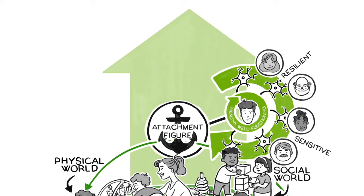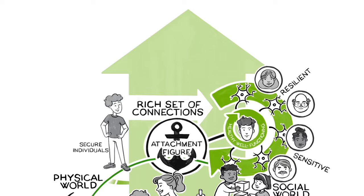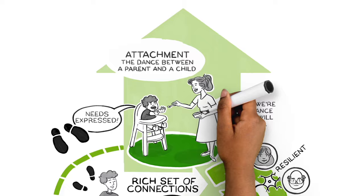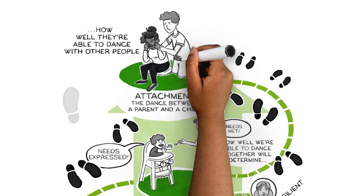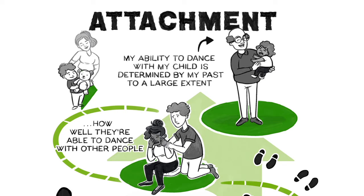In secure individuals, we see that rich set of connections. When we talk about attachment, we're talking about the dance between a parent and a child. How well we're able to dance together will determine how well they're able to dance with other people later in life. We also know that my ability to dance with my child is determined by my past to a large extent.